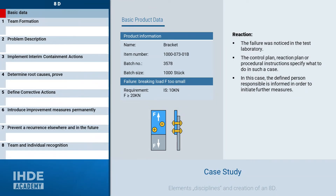Before the actual 8D process begins, some basic data or information must first be compiled. This includes information about the affected product such as the product designation, the part number, which production lot is affected, and how many products. Which feature is being complained about — what is the desired state compared to the actual state? Where was the defect discovered? For example, in the test laboratory during the braking load test, whereupon the responsible person was alerted in accordance with the reaction plan in the control plan in order to initiate all further measures.